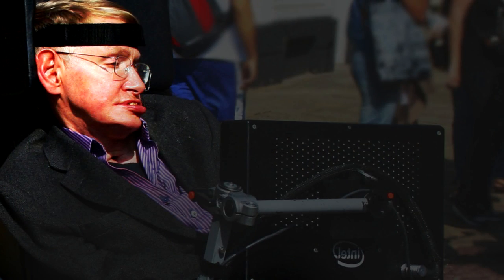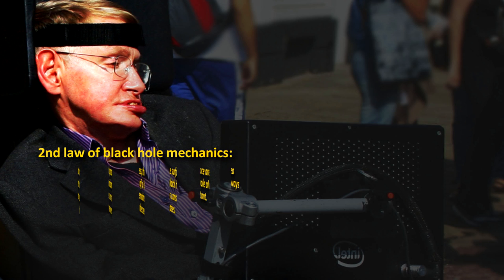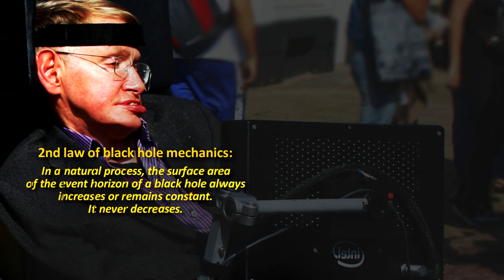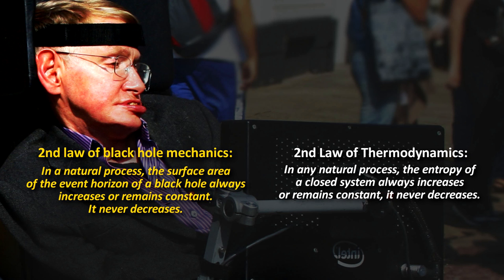So Hawking postulated an analogous theorem for black holes, and it is called the second law of black hole mechanics. And it says, in any natural process, the surface area of the event horizon of a black hole always increases or remains constant. It never decreases. So now you can see the parallels with the second law of thermodynamics regarding entropy.